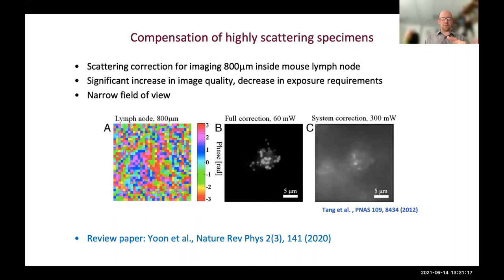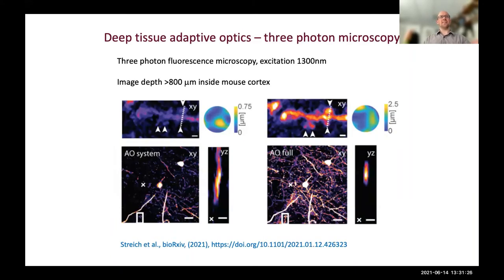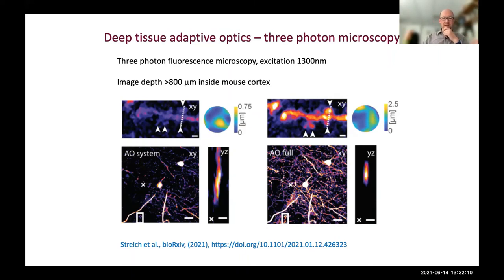One of the main areas where adaptive optics is used is deep tissue imaging. A recent example from Robert Prevedel's group at EMBL uses three-photon microscopy to image large depths up to a millimeter inside brain tissue. Three-photon microscopy is very promising for neural imaging because it works at a much longer wavelength that can penetrate further into tissue, but as it penetrates further, you suffer from more aberrations - making this one of the current frontiers of deep tissue adaptive optics.